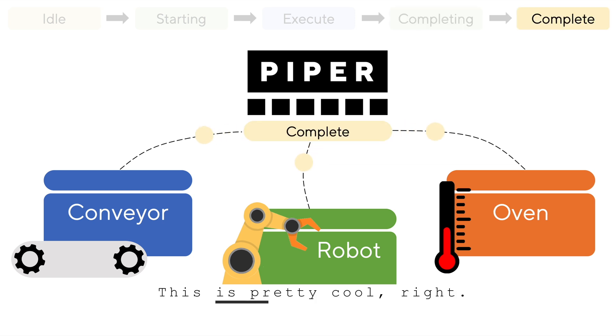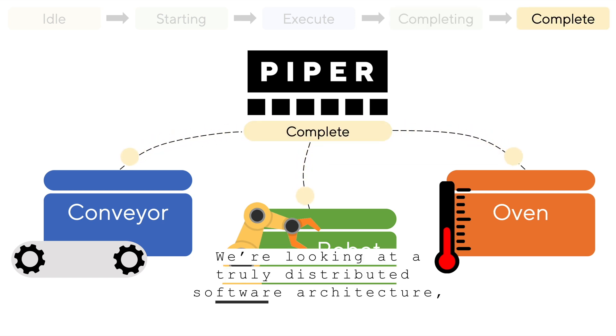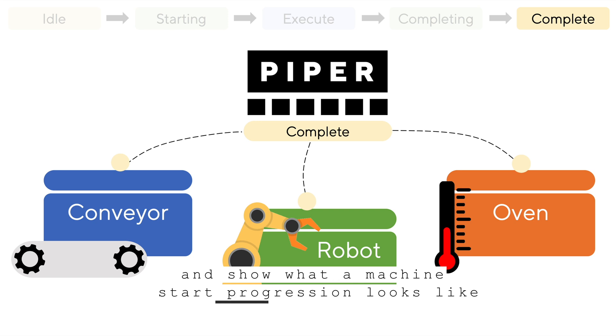This is pretty cool, right? We're looking at a truly distributed software architecture without any cross coupling between components. To prove my point, I'll revisit the earlier scenarios that broke the traditional approach, and show what a machine start progression looks like in these cases.